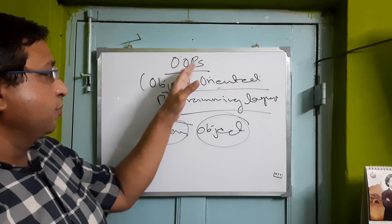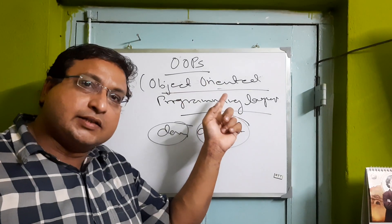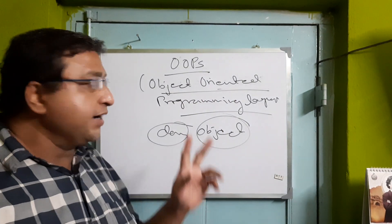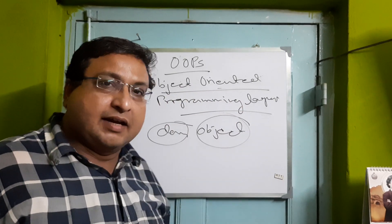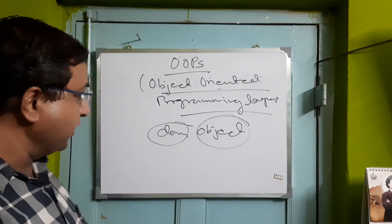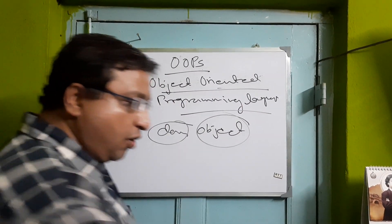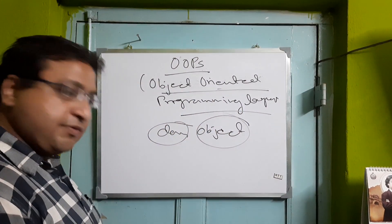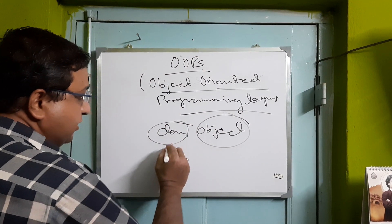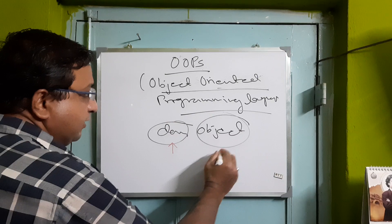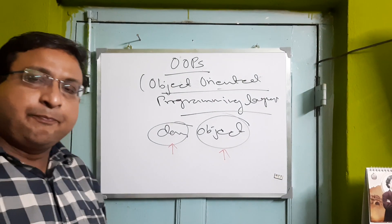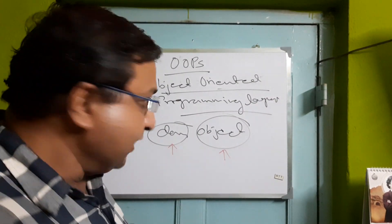This brings us to OOP — object oriented programming languages. Whenever we talk about object oriented programming languages, it consists of two things: one is what we call a class, and one is what we call an object, as I have written over there.